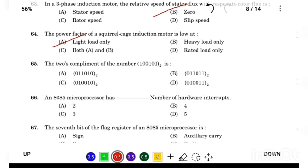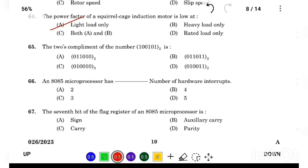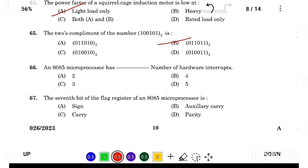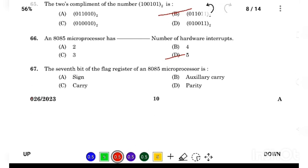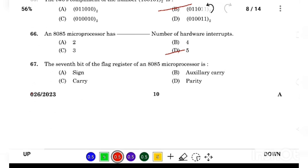The two's complement of number 101 is Answer Option B. An 8085 microprocessor has Answer Option D number of hardware interrupts. The seventh bit of flag register of an 8085 microprocessor is Answer Option A, sign.